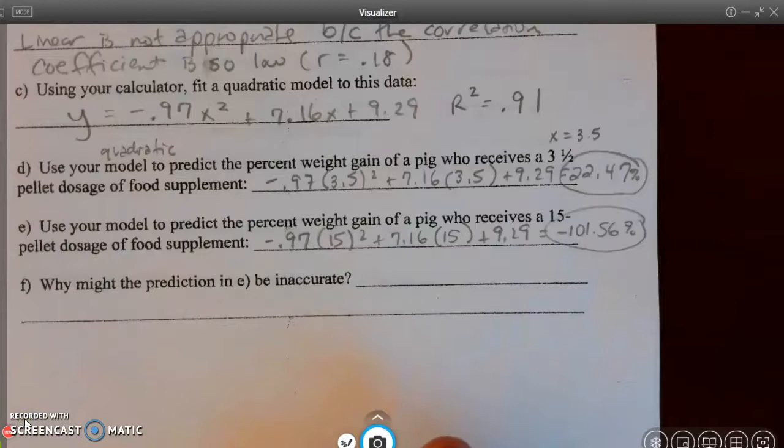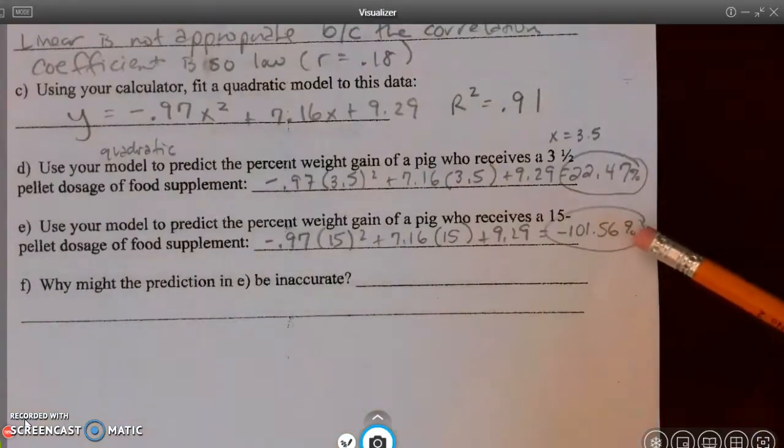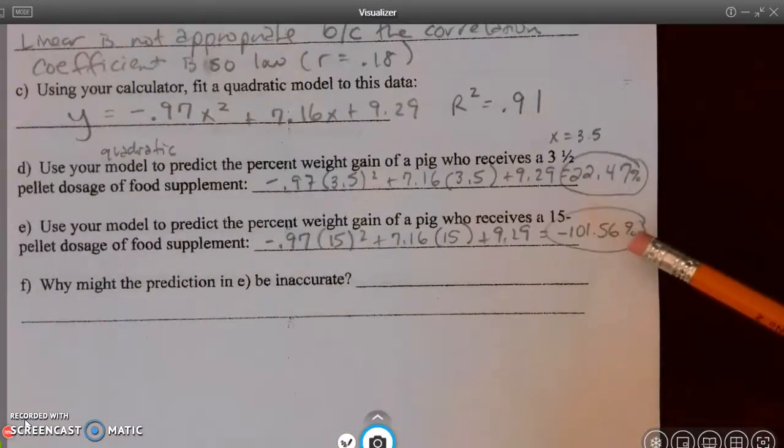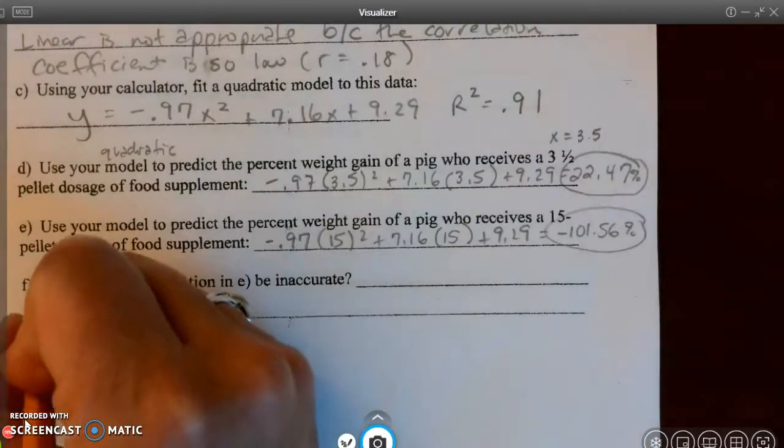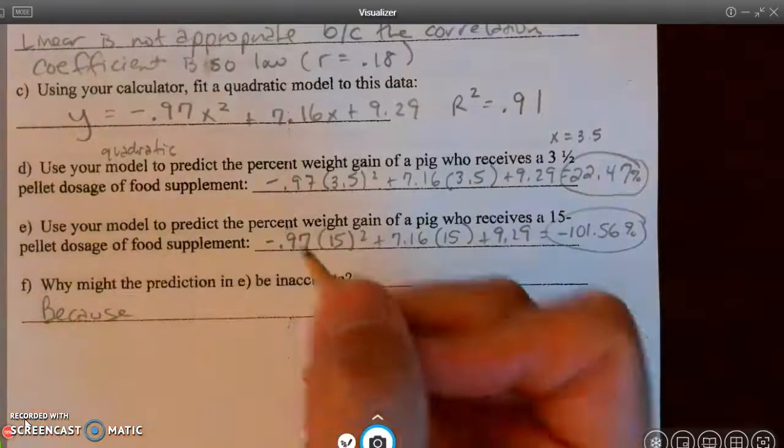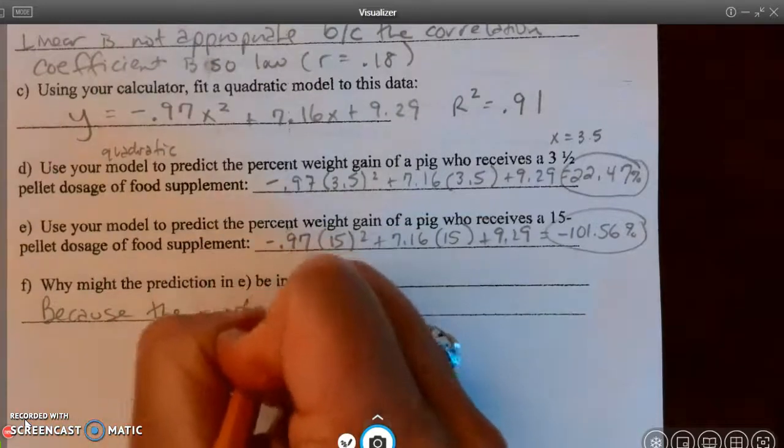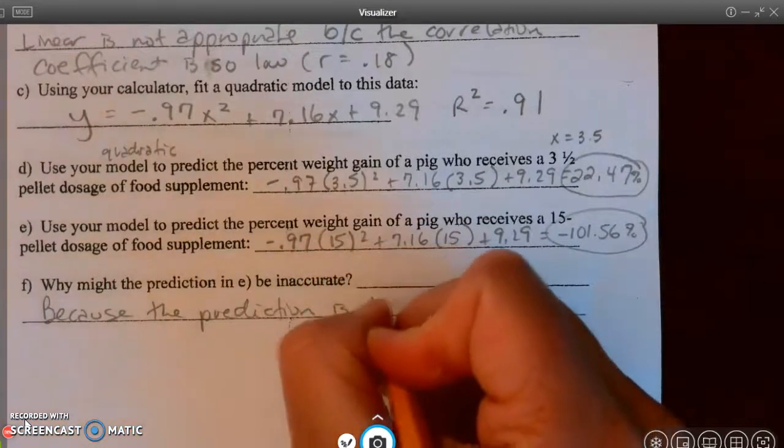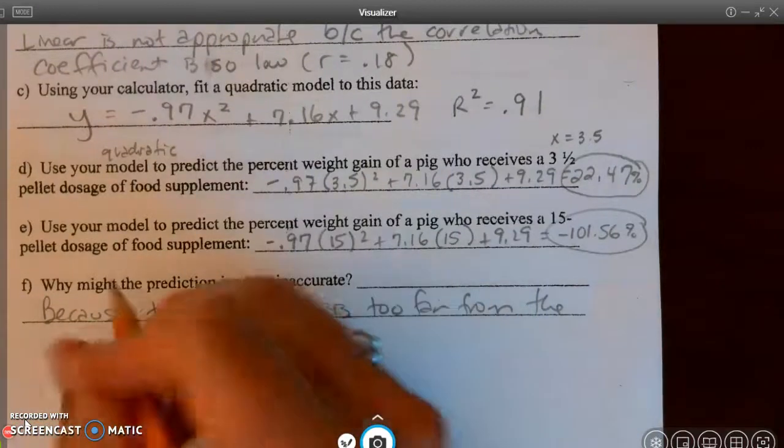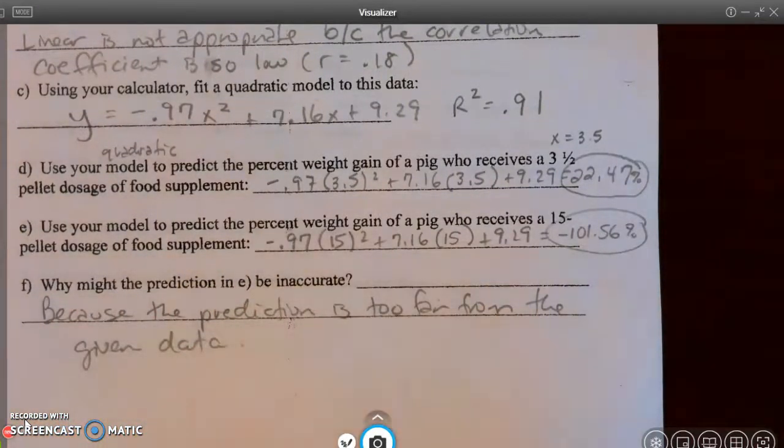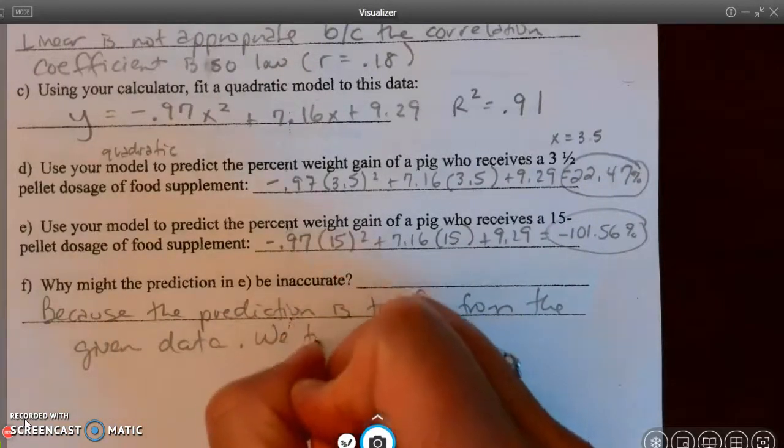All right. So a negative 101.56% weight gain. So in other words, this pig has lost more than all of its weight. A hundred percent is all of its weight. It's impossible to lose more than all of your weight. So why might the prediction in Part E be inaccurate? Well, because the prediction is too far from the given data. Because the prediction is too far from the given data. And that's one of the instances where extrapolation just shows that we've extrapolated too far. We tried to extrapolate too far.